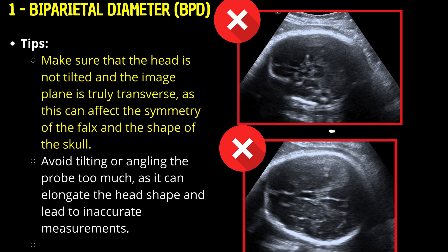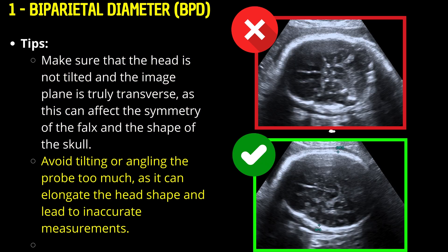Tips for BPD: Make sure the head is not tilted and the image plane is truly transverse, as this can affect the symmetry of the falx and the shape of the skull. Avoid tilting or angling the probe too much, as it can elongate the head shape and lead to inaccurate measurements.